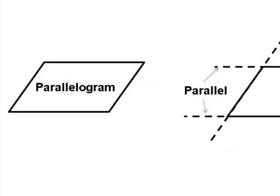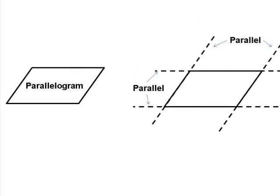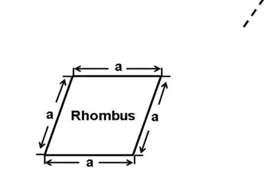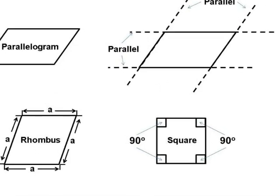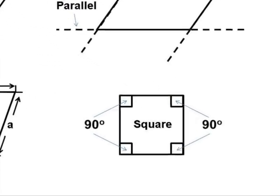A parallelogram is a shape that has two pairs of parallel sides. A rhombus is a parallelogram with four equal sides. A square is a special rhombus that has four right angles.